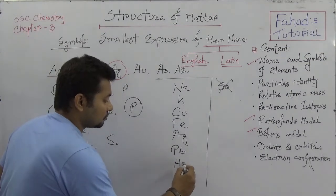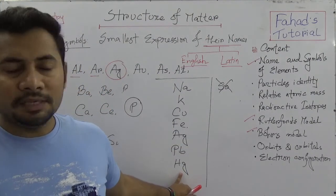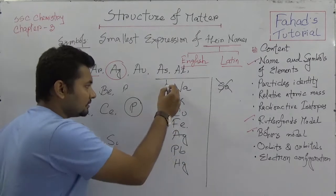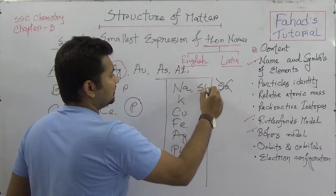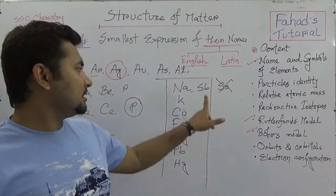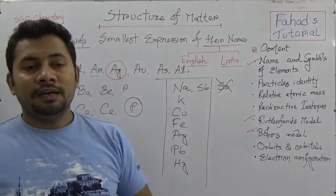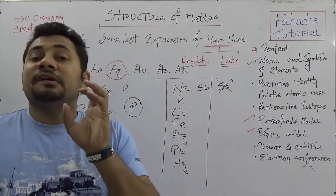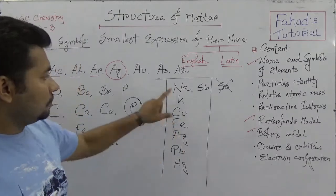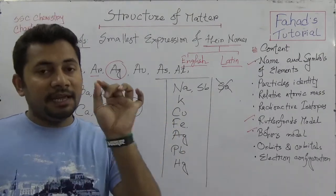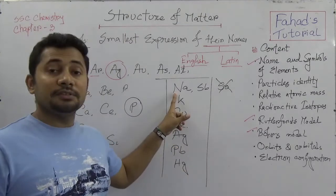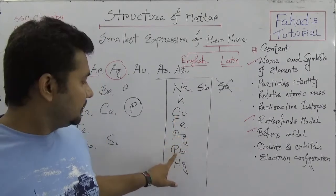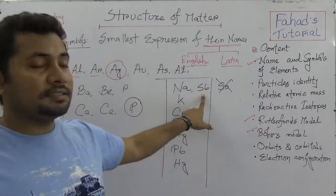'HG' is mercury because the Latin name of mercury is Hydrargyrum. And 'SB' is antimony — its Latin name is Stibium. So these are the series of Latin-named elements: sodium from Natrium, potassium from Kalium, copper from Cuprum, iron from Ferrum, silver from Argentum, lead from Plumbum, mercury from Hydrargyrum, and antimony from Stibium.